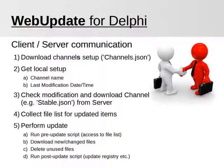Once the file list is available, the update can actually be performed. This last step runs in a separate thread to keep the GUI responsive. It includes running scripts before and after the update, downloading the files, and deleting files marked for deletion. For all file downloads, the HTTP or HTTPS protocol is used, making it possible to use proxies or to move the download source into the cloud.